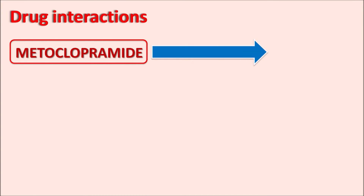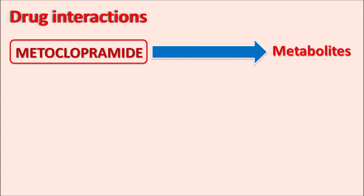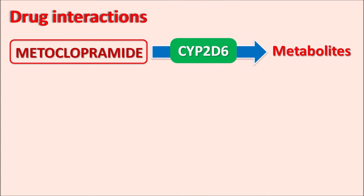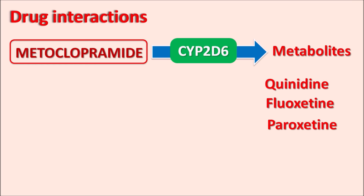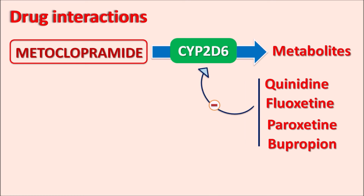Metoclopramide is metabolized by the cytochrome P450 system, particularly CYP2D6. Drugs that block CYP2D6 — such as quinidine (an antiarrhythmic agent), fluoxetine, paroxetine (antidepressants), and bupropion (an antidepressant) — can increase metoclopramide levels and therefore increase extrapyramidal side effects. Whenever these drugs are combined, the dose of metoclopramide should be reduced to prevent extrapyramidal side effects.